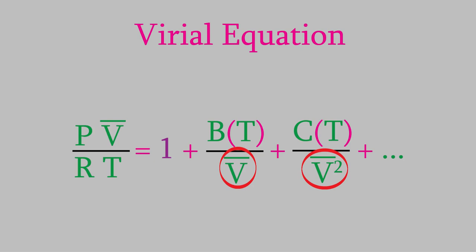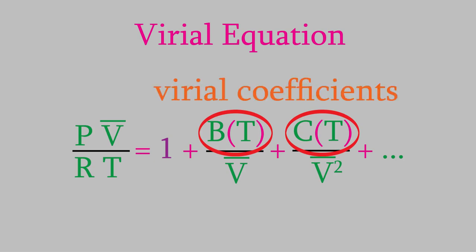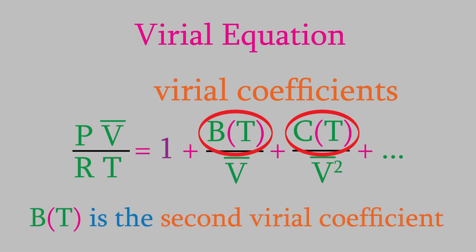In the numerator is a term called a virial coefficient. This is a function that depends on the temperature. That's what the T in parentheses tells us. B is called the second virial coefficient because it's in the second term. C is the third virial coefficient, and so on. Each of them is really a function, and each of those functions contains T as a variable.